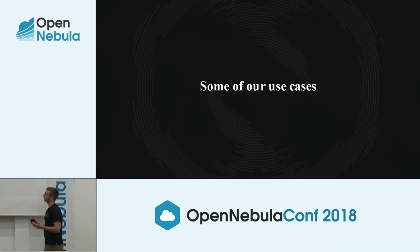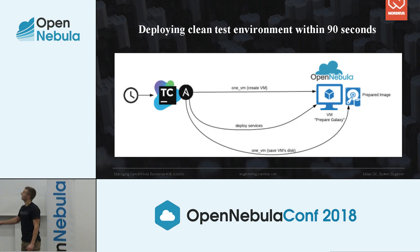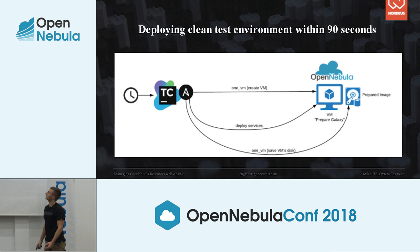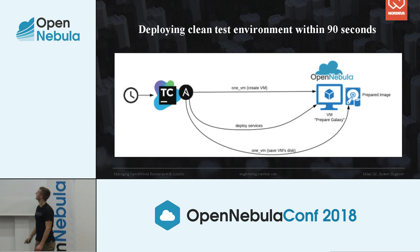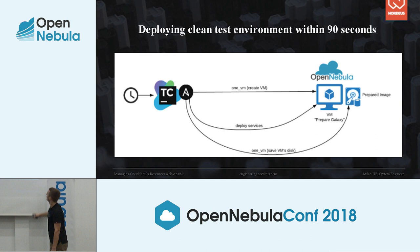I'll show you how we did it. In order to skip the deployment time, which usually lasts more than 10 minutes, once a day a TeamCity job creates a virtual machine from a basic CentOS 7 image using the one_vm module, then TeamCity deploys all Top11 services, and finally powers off and saves the virtual machine's disk as a prepared image — again with the one_vm module. TeamCity is a continuous integration tool. At the end, it creates a prepared image which we will later use.